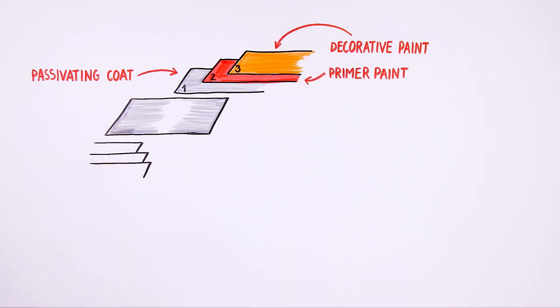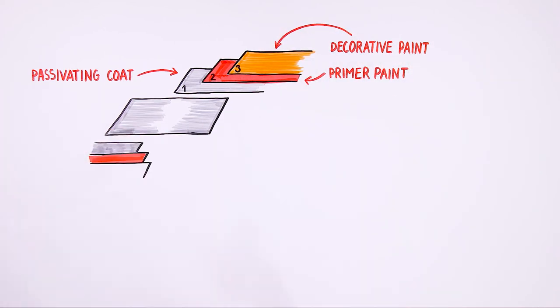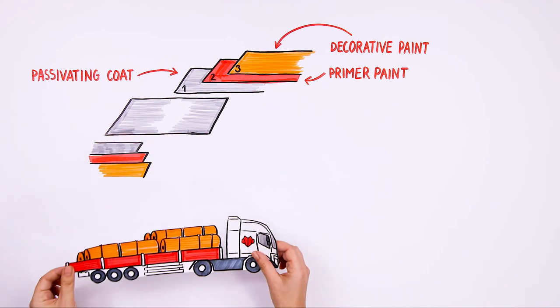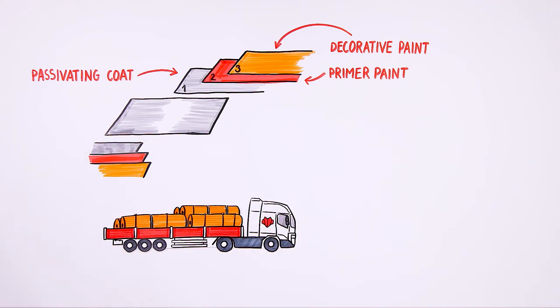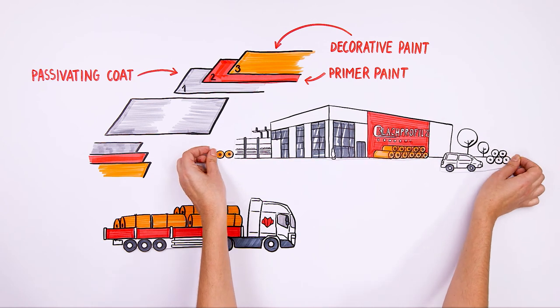Sheet metal in this form is packed and transported to Blach Profil 2, where it is processed into finished products for roofing or facade cladding that shall be sent to our customers.